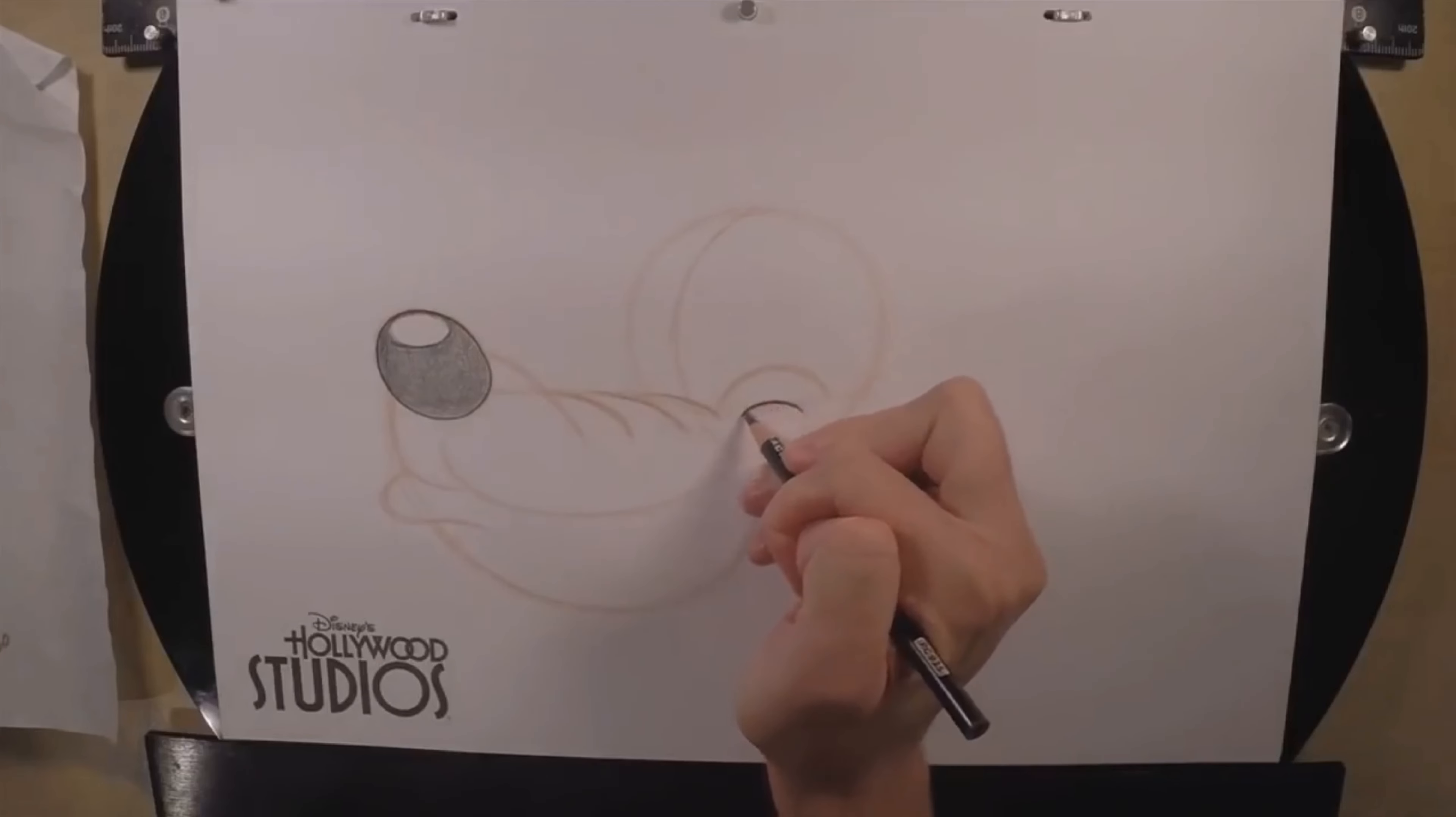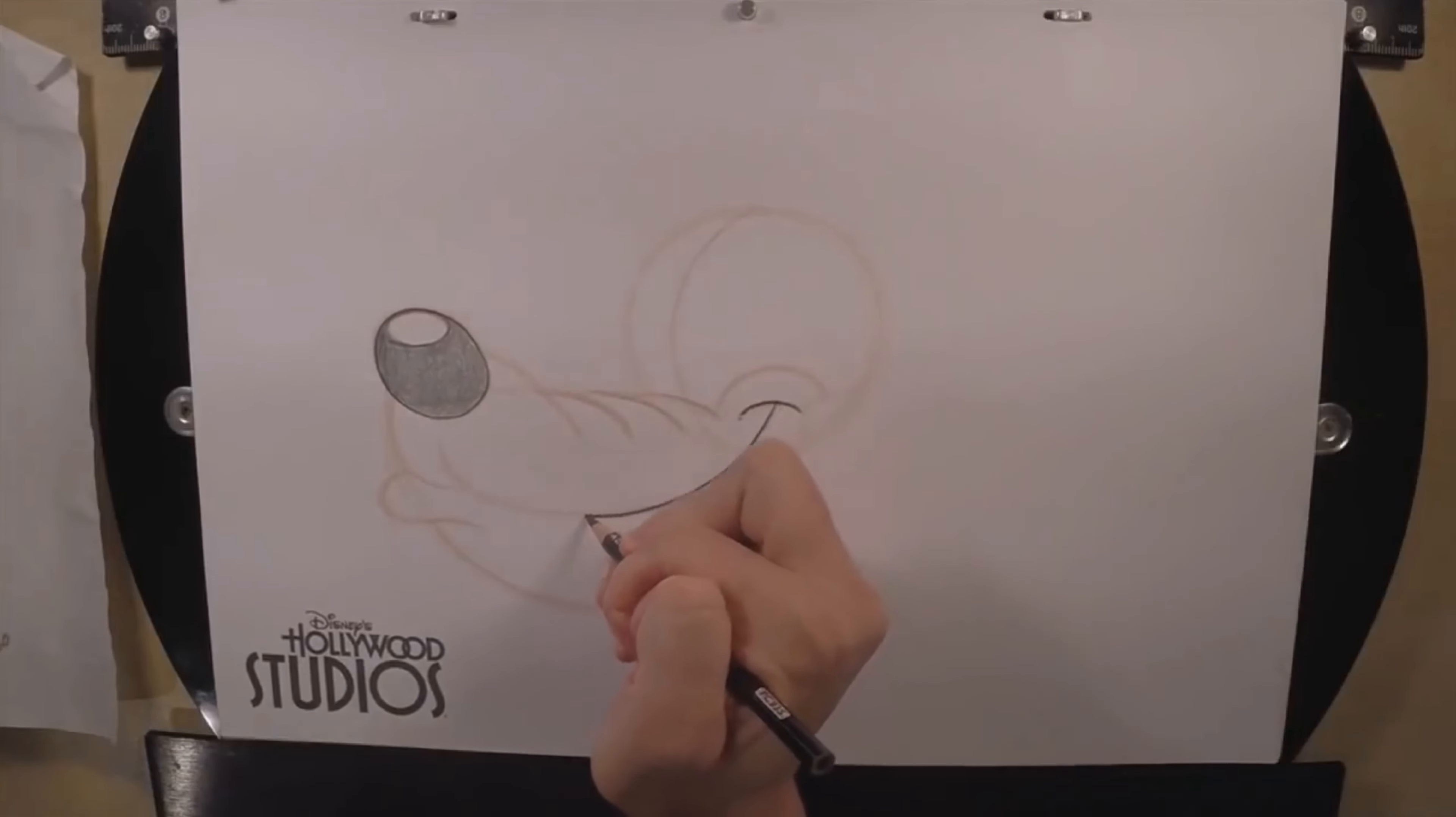Then we're going to go ahead and just darken the lines that we did for the muzzle. Just get all those nice and solid.